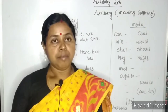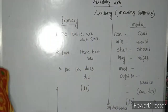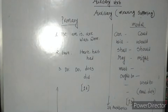Let's start about this topic. Auxiliary means helping verb or supporting verb. There are mainly two kinds of auxiliary verb: primary auxiliary and modal auxiliary.